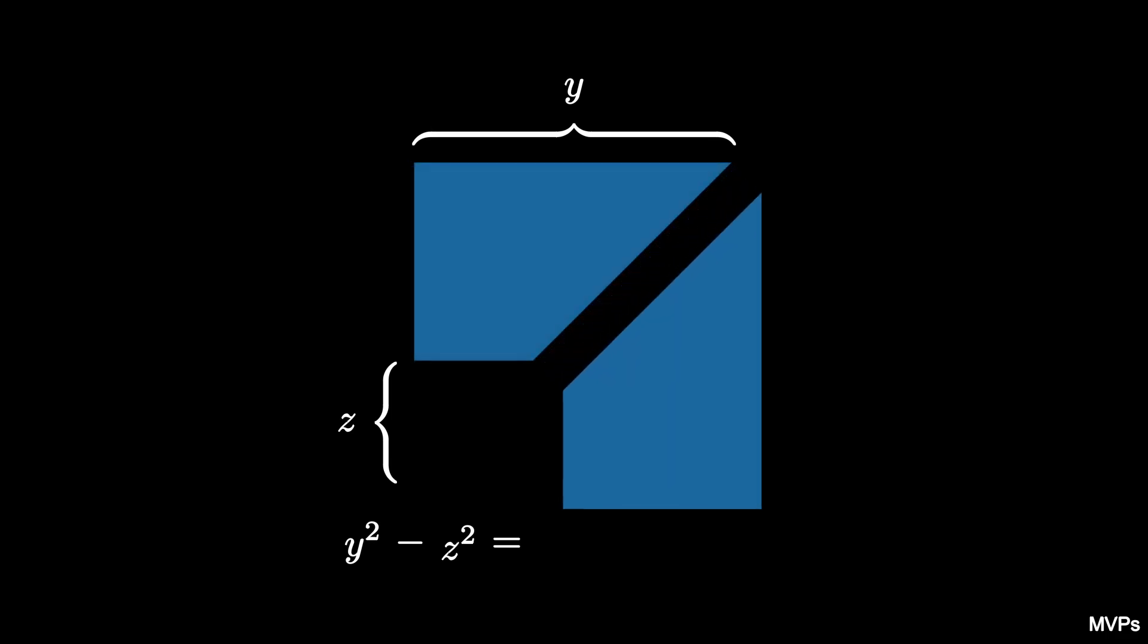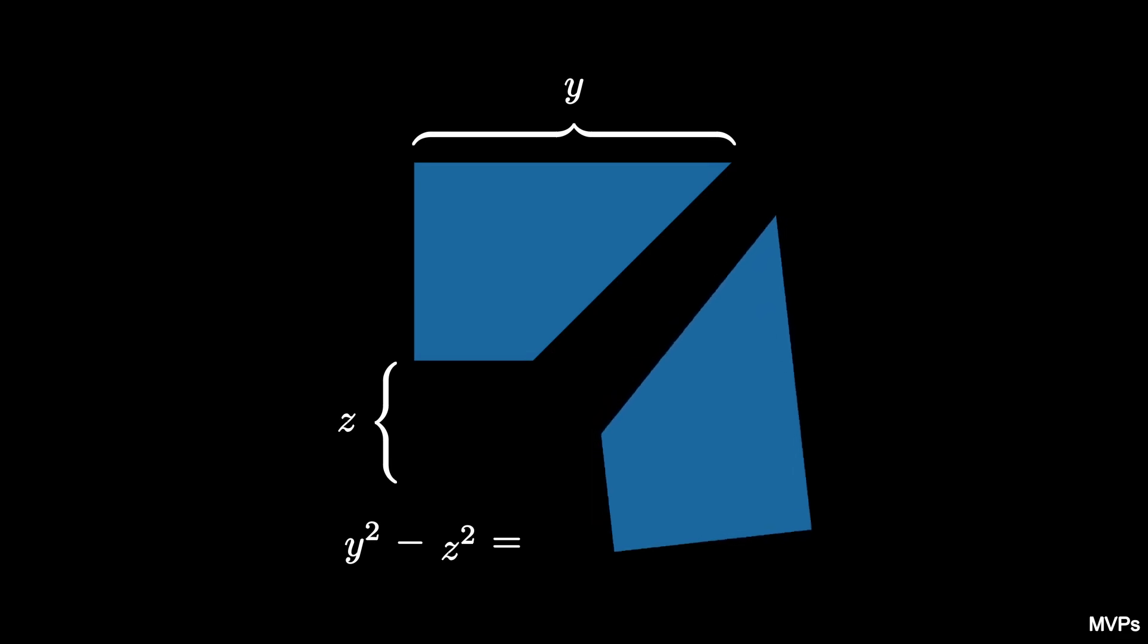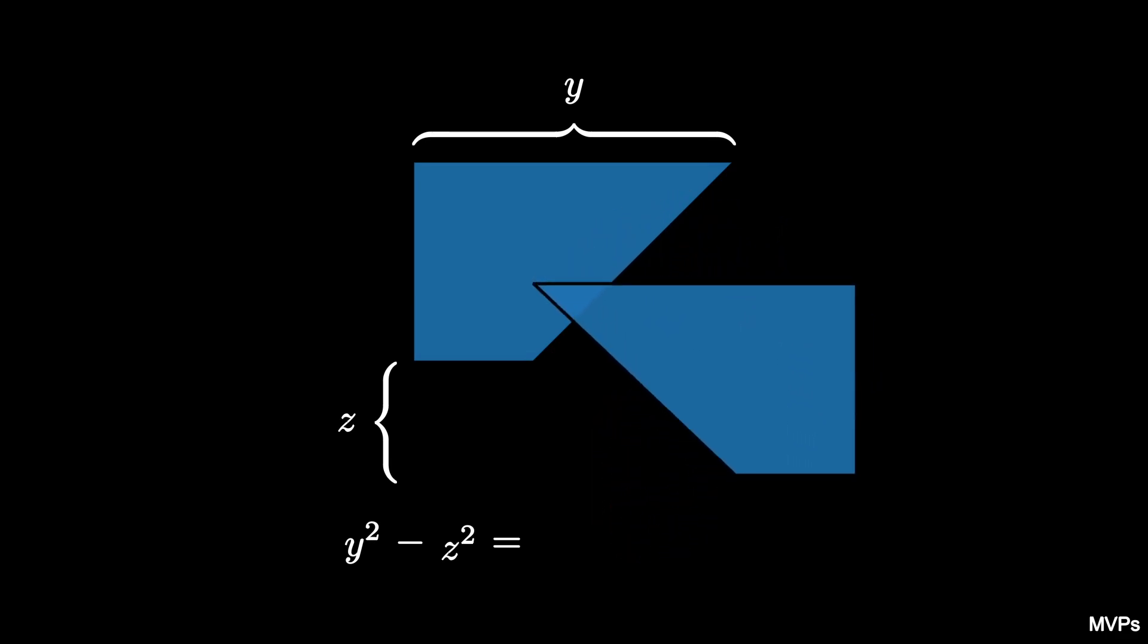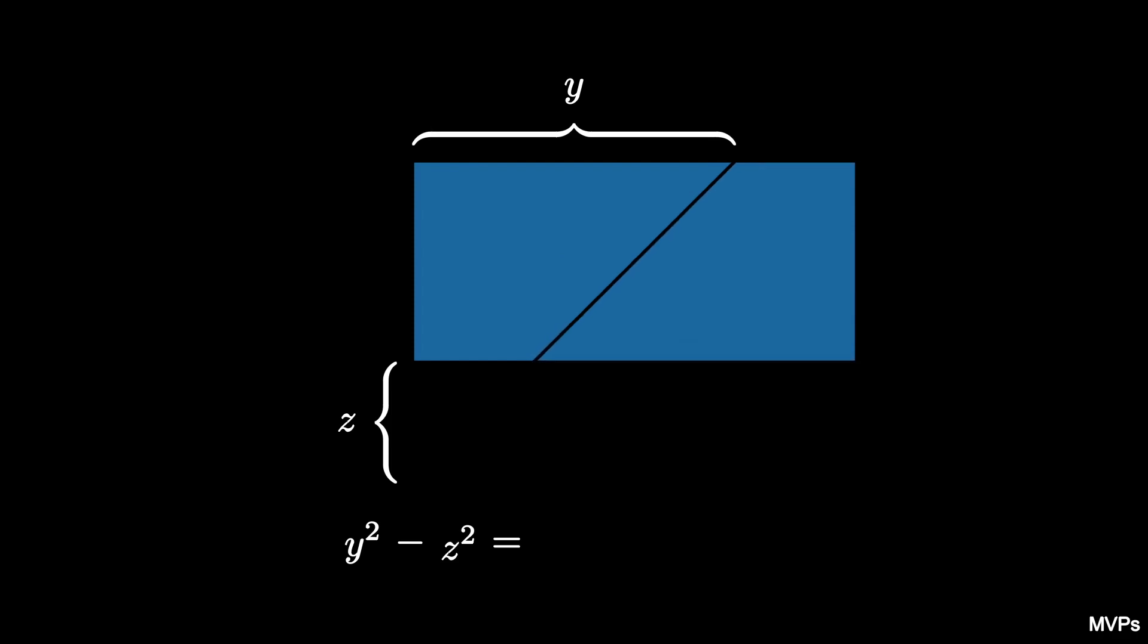We move one of the trapezoids down, rotate it, and then flip it to connect it to the other trapezoid, resulting in a rectangle.